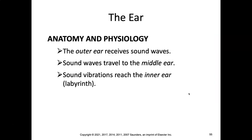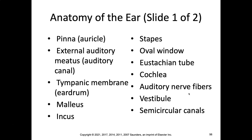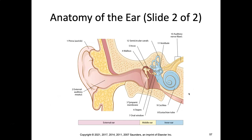Now we're on to the ear. The outer ear receives sound waves. Those sound waves travel to the middle ear, and then the vibrations reach the inner ear, also known as the labyrinth. Parts of the ear you need to know: the pinna or auricle, external auditory meatus or auditory canal, tympanic membrane (eardrum), malleus, incus, stapes, oval window, eustachian tube, cochlea, auditory nerve fibers, vestibule, and semicircular canals. In the book, we are now on page 670.